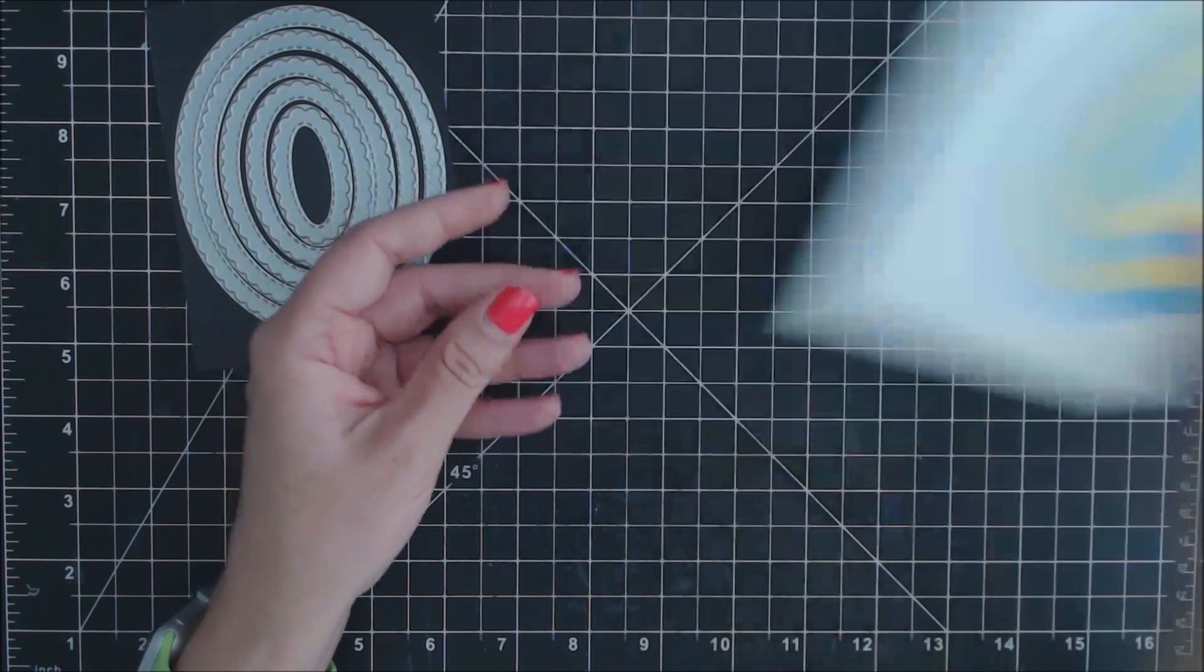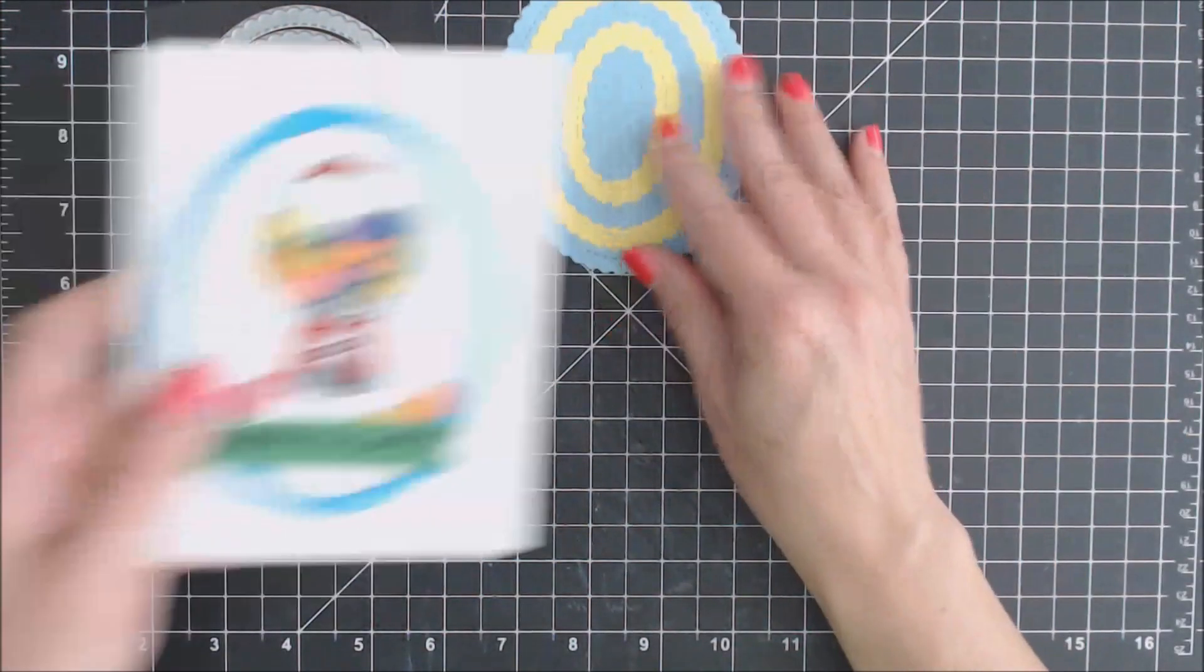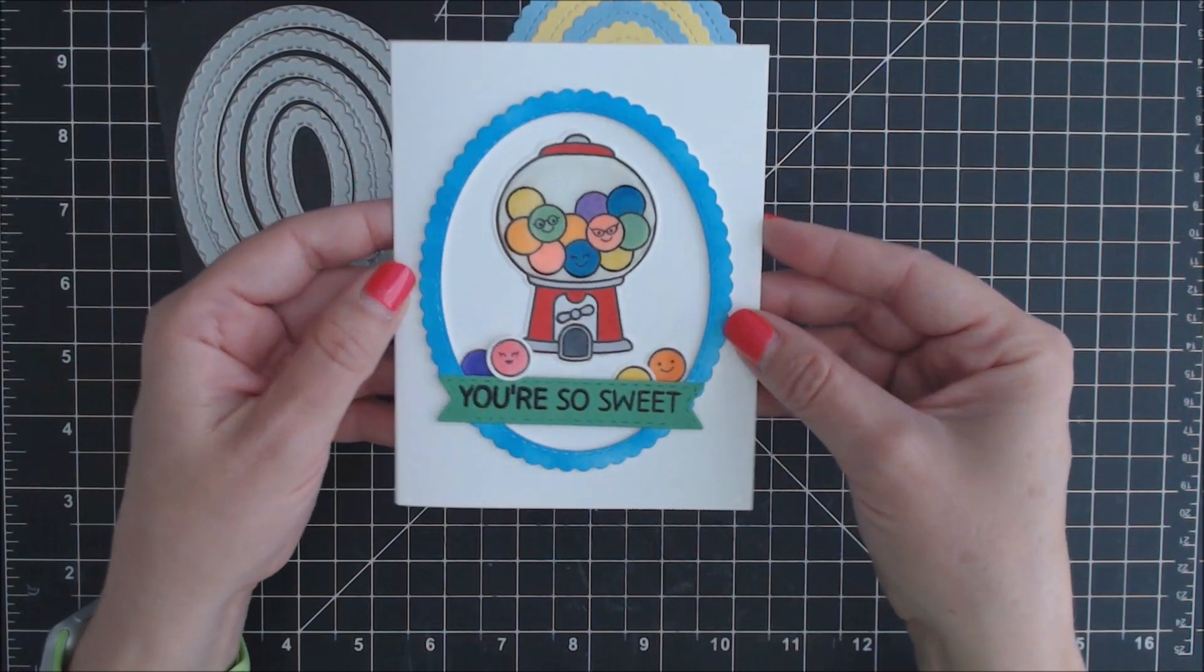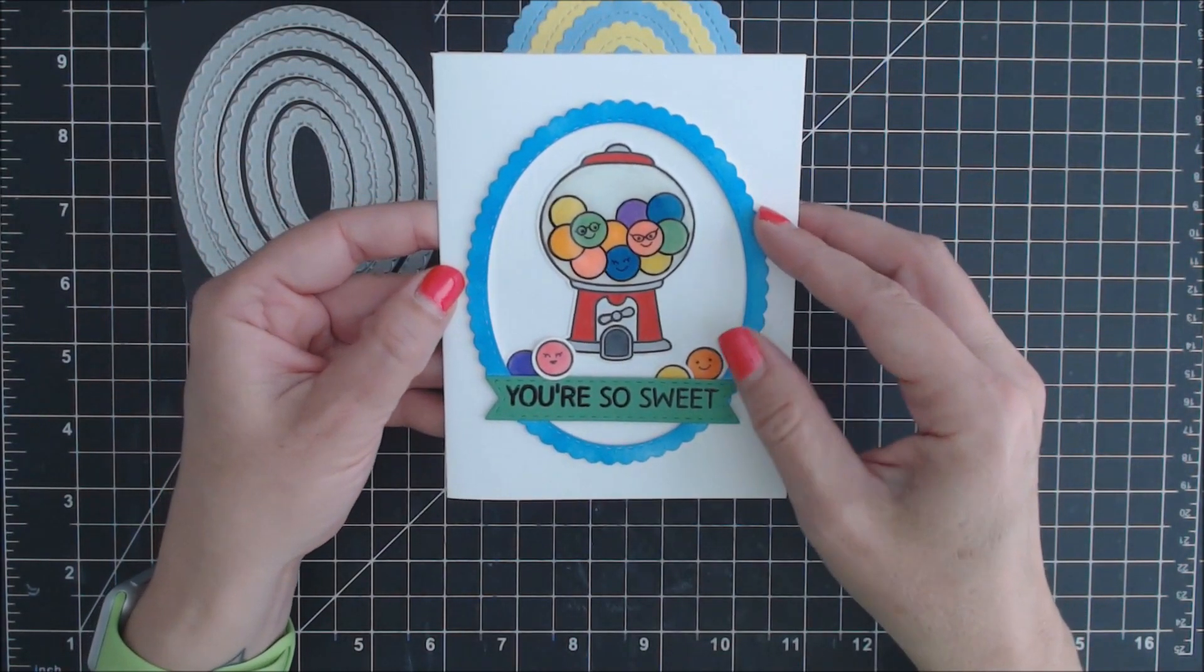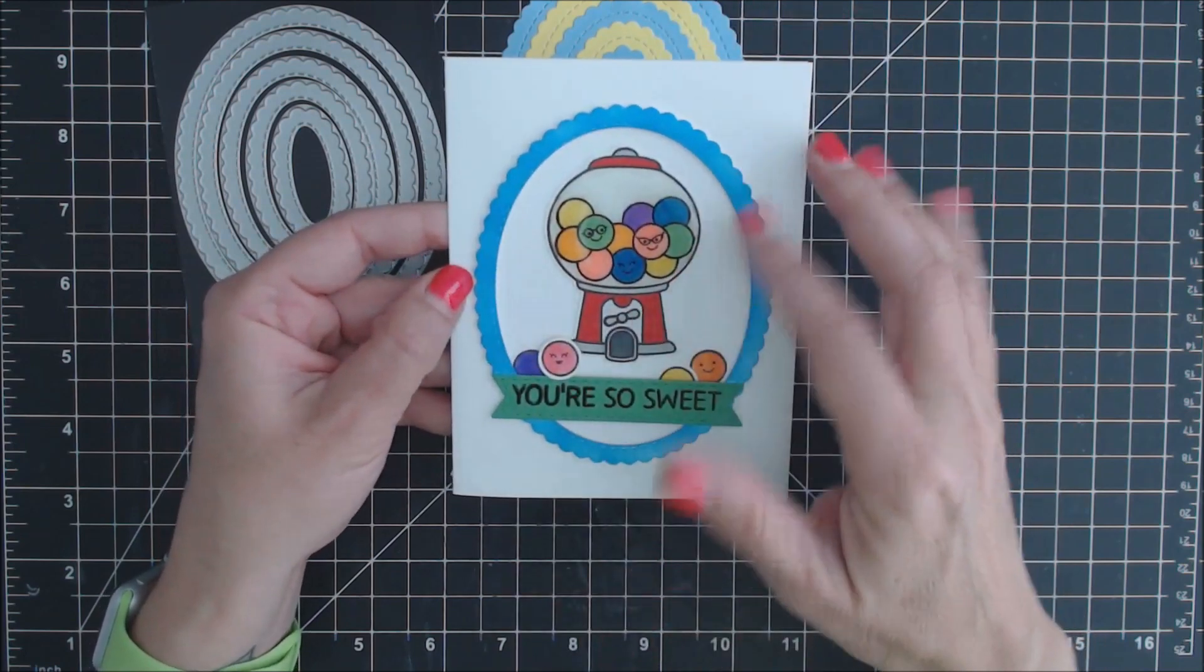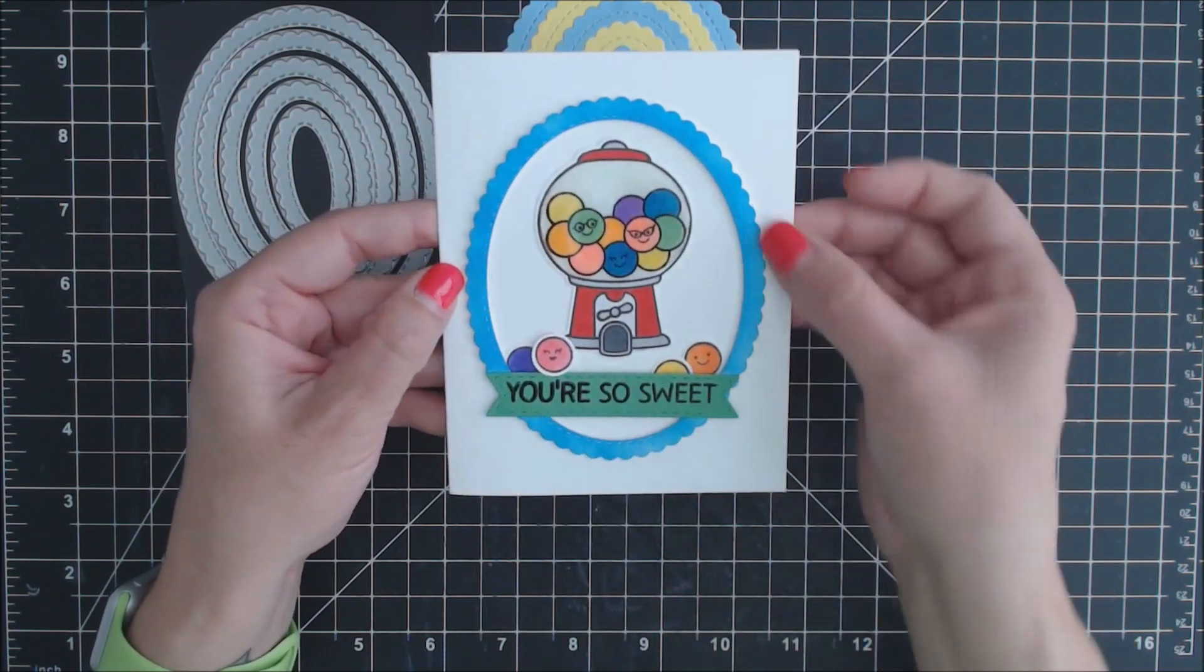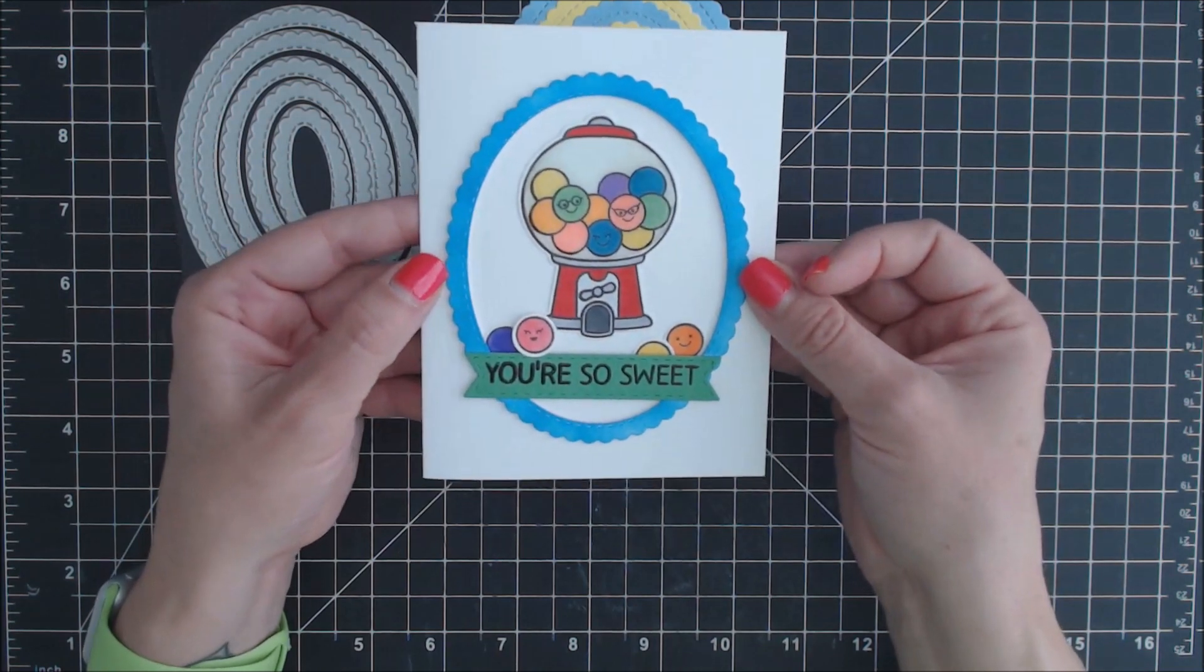I created a card using this. I cut out the largest oval and then cut out a regular oval from my stash just to create this cute little frame and popped it up on the card.